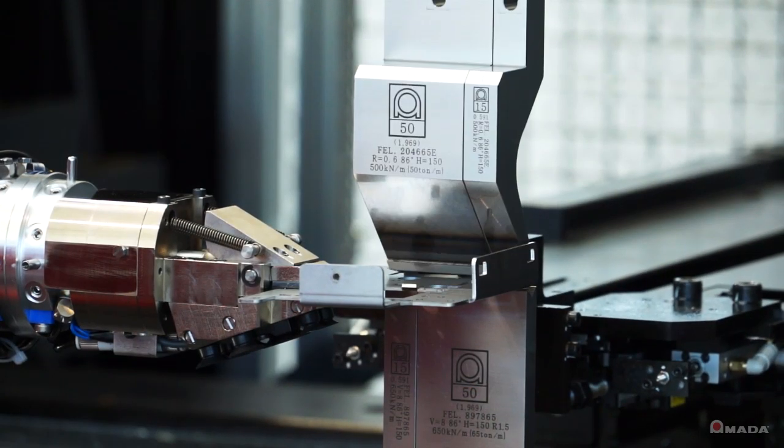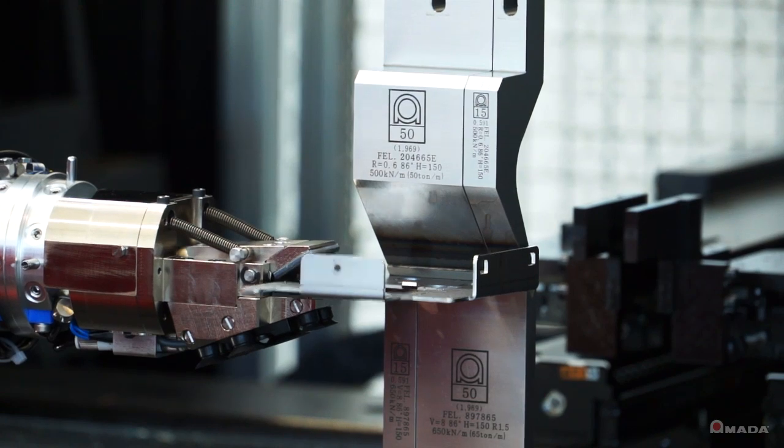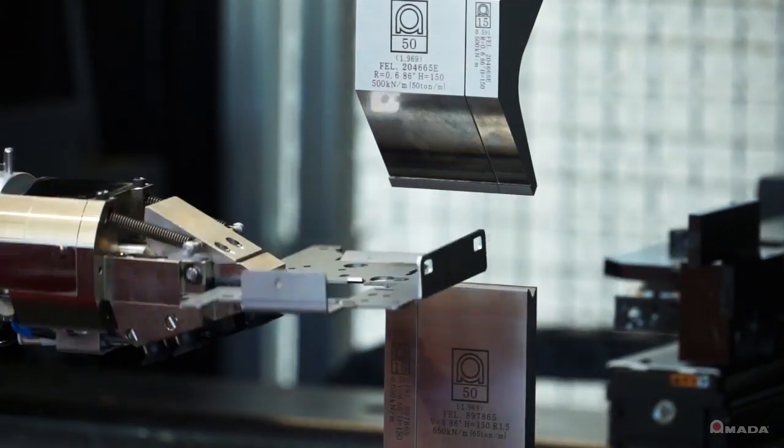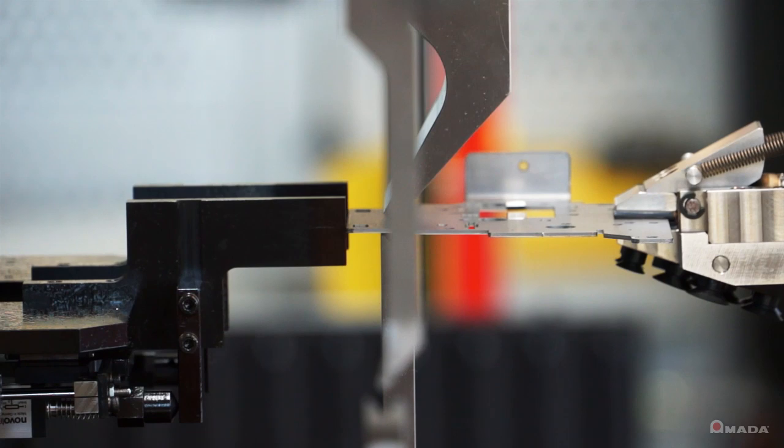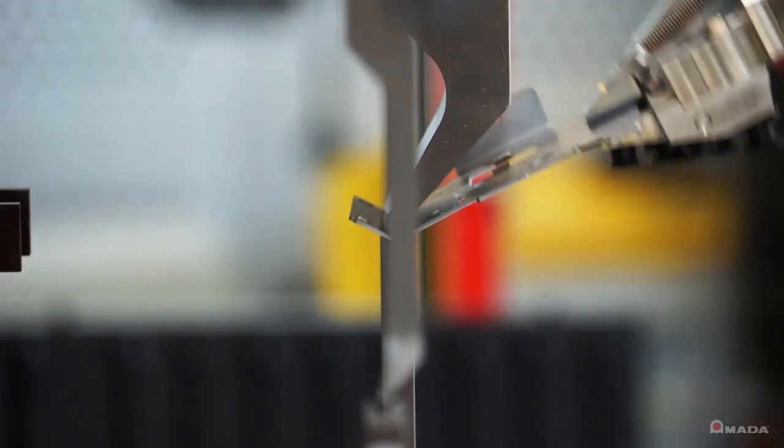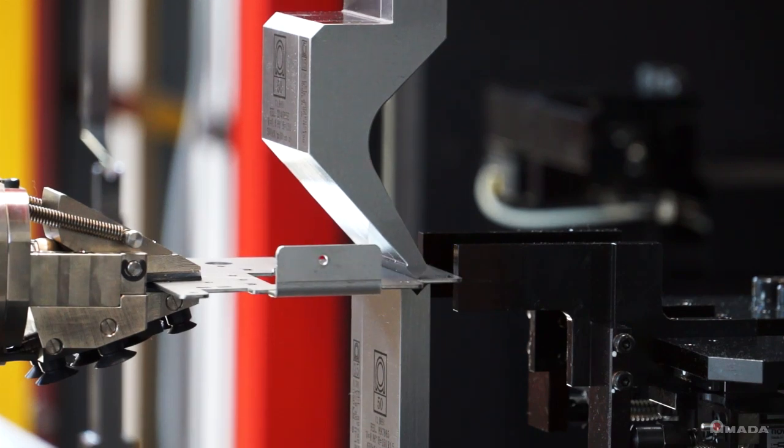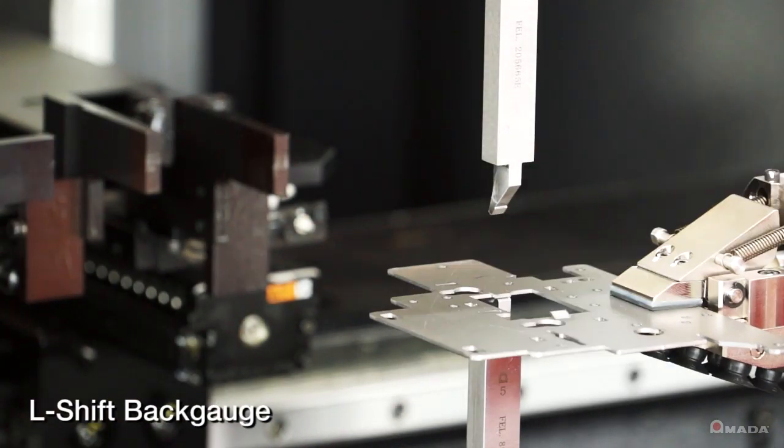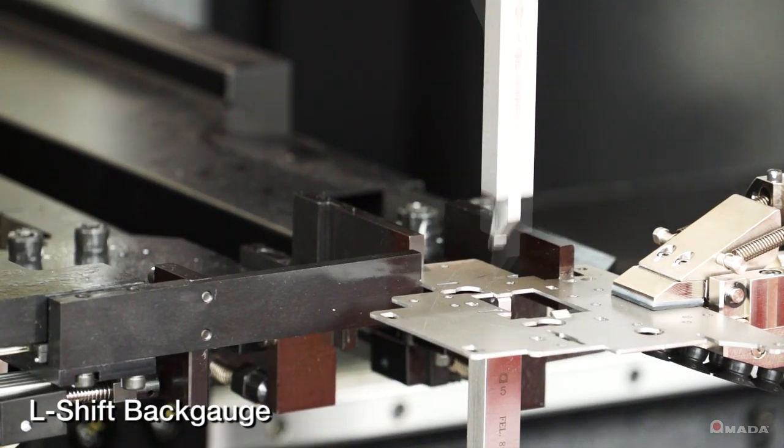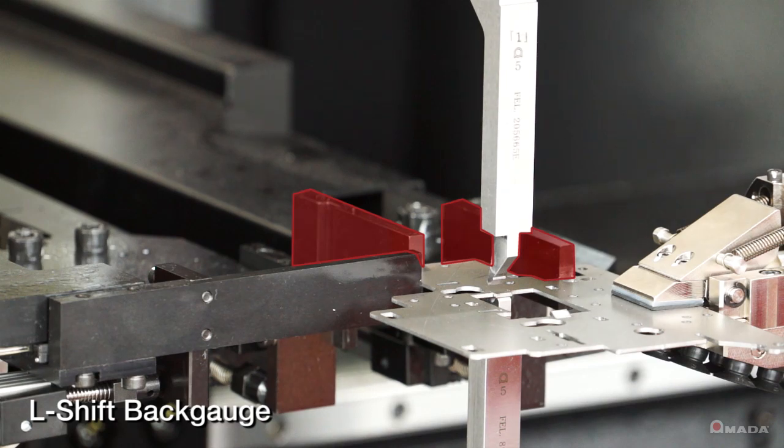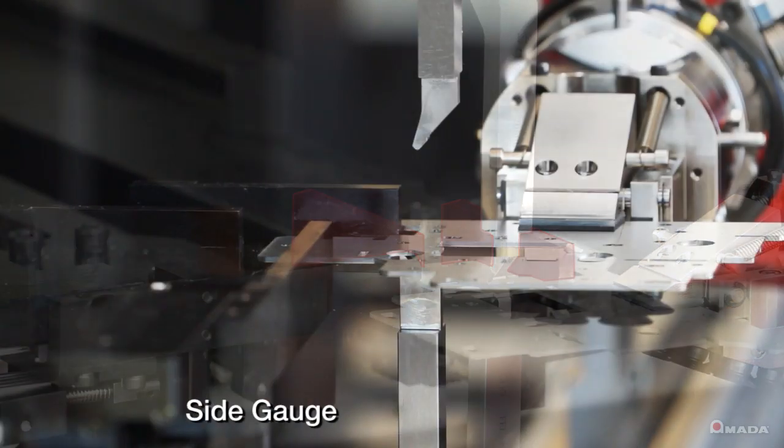Innovative features on the back gauge work seamlessly with the robot to produce parts with high precision. Independent potentiometer back gauges adjust for any lateral discrepancies as the robot positions the part on each tool. Also, the back gauge features an L-shift function that allows each back gauge finger to move independently and an additional side gauge to offer three-point gauging.